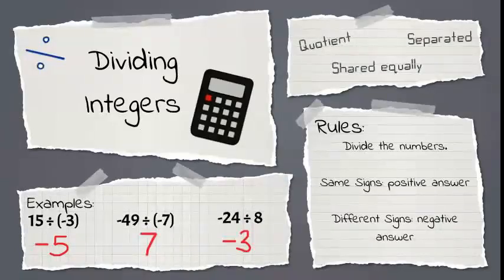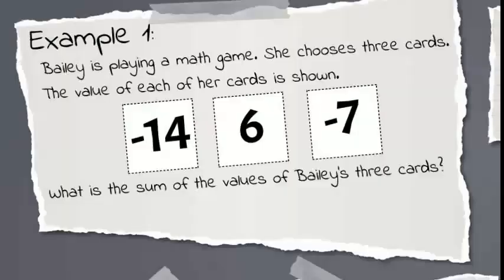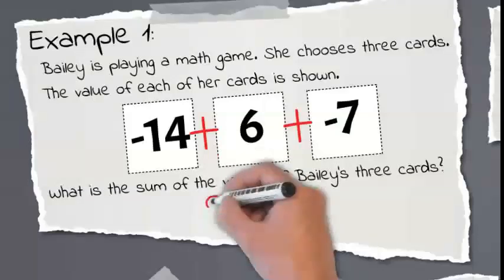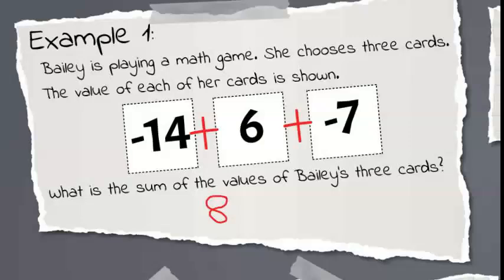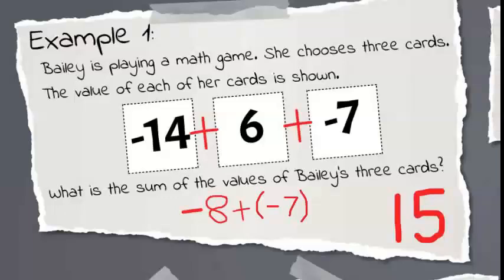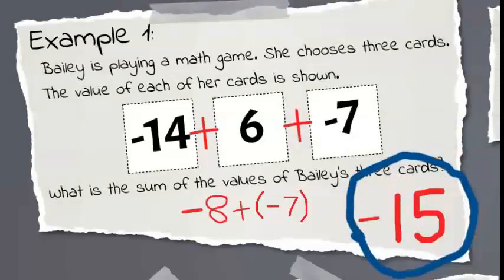Now we've covered all the rules, so it's time to mix it in with a little order of operations and try some more challenging problems. Example 1: Bailey is playing a math game. She chooses 3 cards. What is the sum of the value of Bailey's 3 cards? If we're looking for the sum, we want to add these values. Starting with negative 14 plus 6 — different signs — so we subtract: 14 minus 6 gives us 8, and negative 14 has the larger absolute value, so our answer is negative. Now we add negative 7 — same sign — so we add and get 15, keeping the sign negative. So our answer is negative 15.